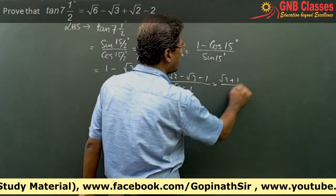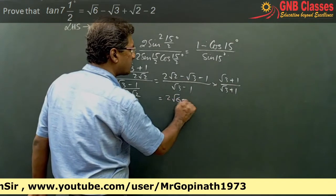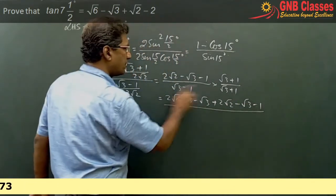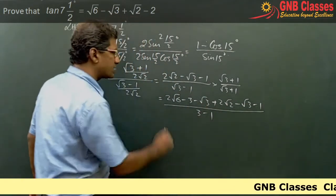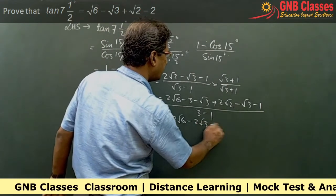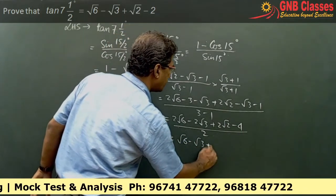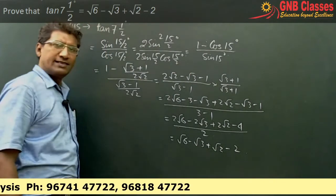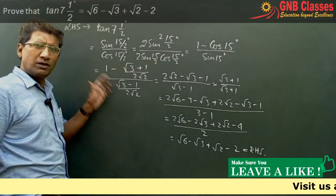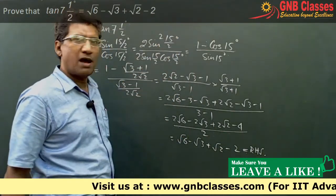Multiplying numerator and denominator by (√3 + 1), the denominator becomes (√3)² − 1² = 2. In the numerator we get 2√6 − 2√3 + 2√2 − 2 − ... simplifying gives (√6 − √3 + √2 − 2) / 2 × 2 = √6 − √3 + √2 − 2, which is exactly the right-hand side. So tan(7.5°) = √6 − √3 + √2 − 2.